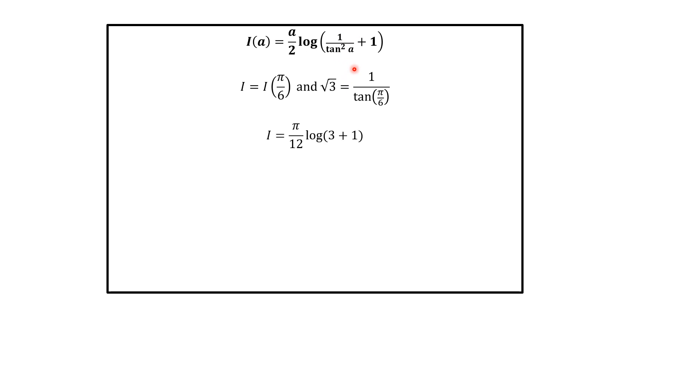So that i equals pi over 12 log of 3 plus 1, but 3 plus 1 is 4, and 4 is 2 squared. So log 4 is 2 times log of 2, and then we have i equals pi over 6 log 2, and this is the answer.